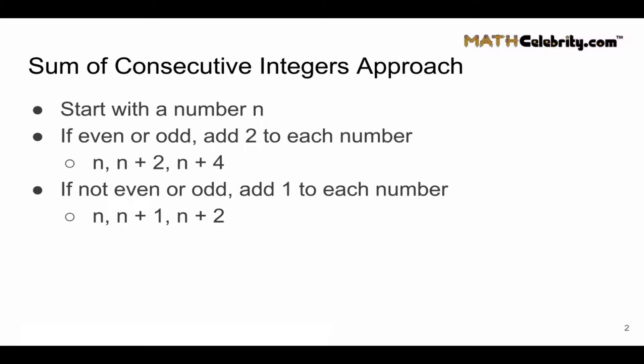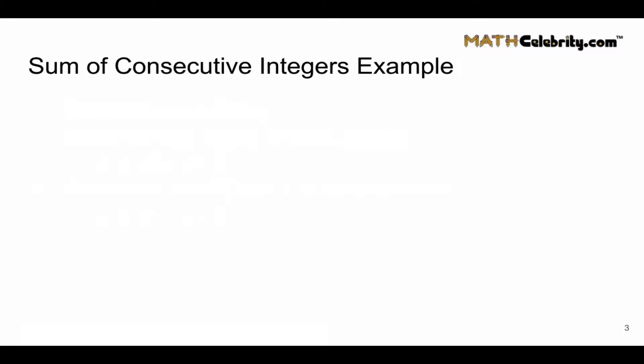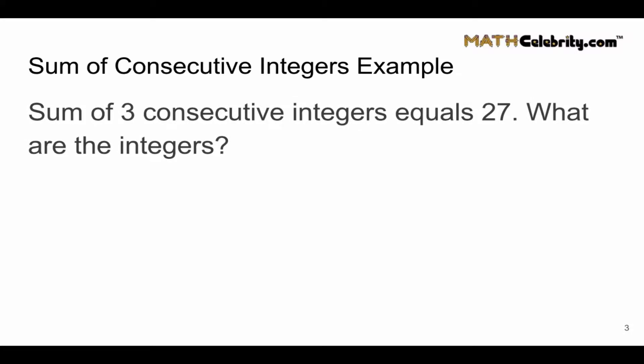For the sum of consecutive integers approach, we're going to start with a number n. For these word problems, if they're even or odd consecutive integers, we're going to add two to each one, because to iterate to the next even or odd you add two. If they're just consecutive integers, you add one to each number — so n, n plus one, and n plus two.